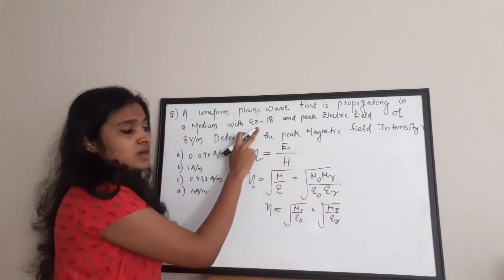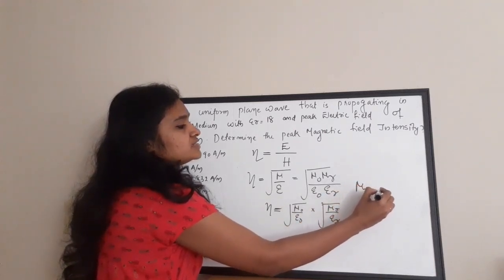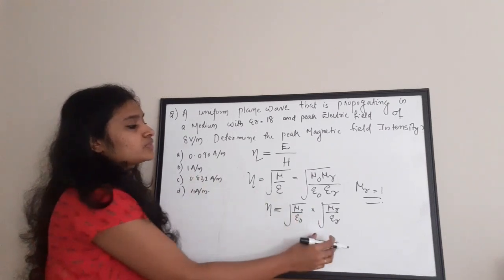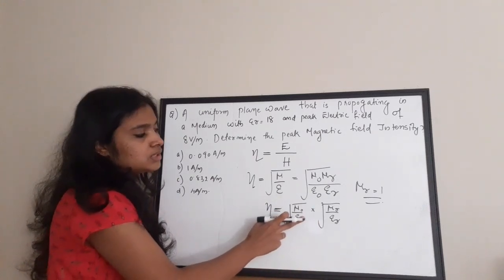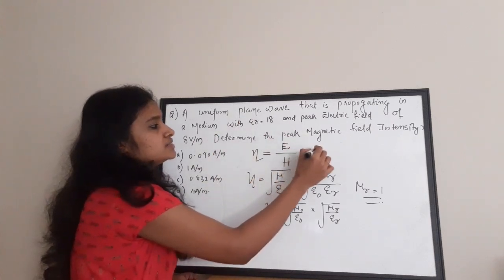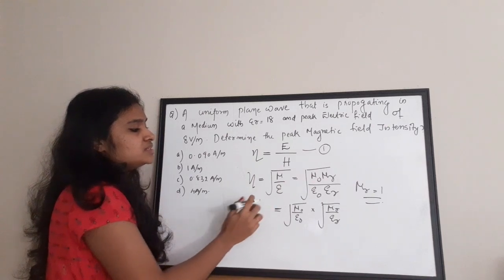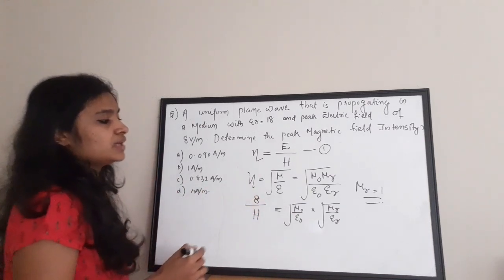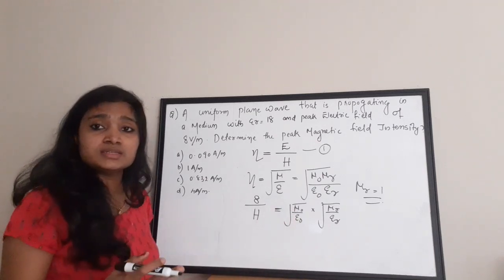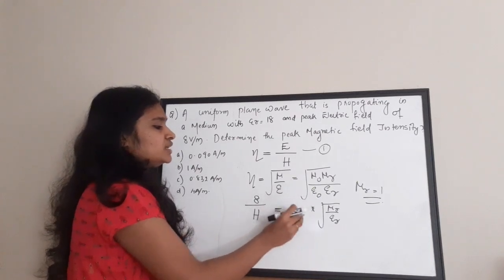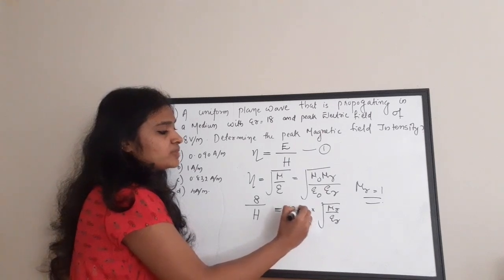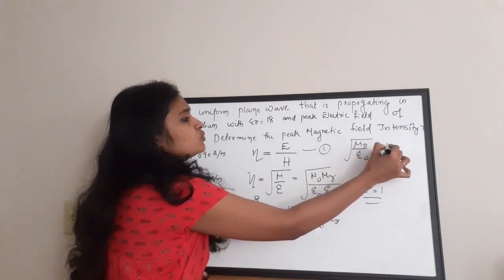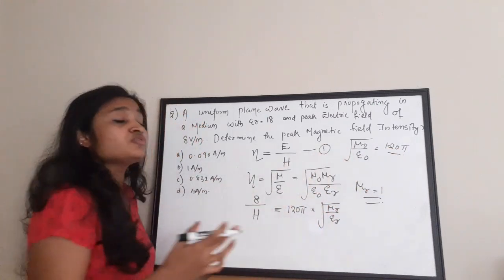In this question, epsilon r is given and we take mu r equal to 1. The value of root of mu0 by epsilon0 is 120 pi, which equals approximately 125. This is a constant term you need to memorise for electromagnetic theory questions. So equating E by H with this expression, E is 8 volt per meter, and we substitute root of mu0 by epsilon0 as 125.